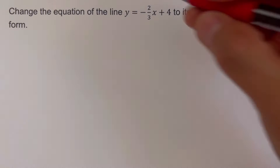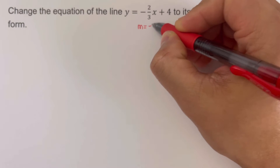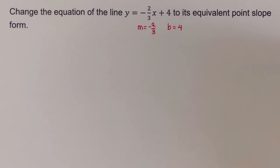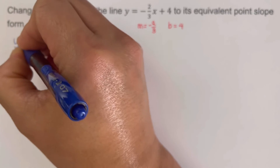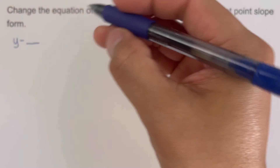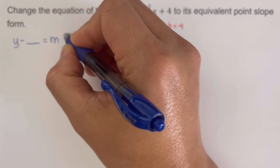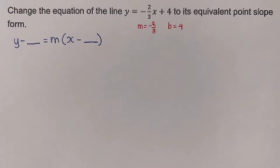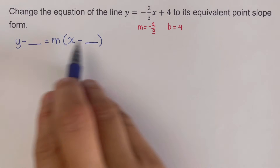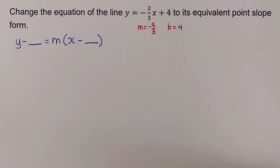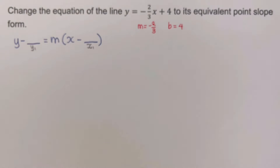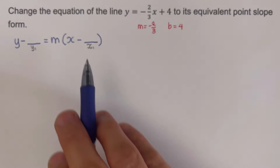Looking at the equation, our slope m is negative 2 over 3 and our y-intercept b is 4. We go ahead and set up the equation in point-slope form: y minus blank equals m quantity x minus blank, where the blanks will be filled in with the coordinates x sub 1 and y sub 1 that we are going to determine.